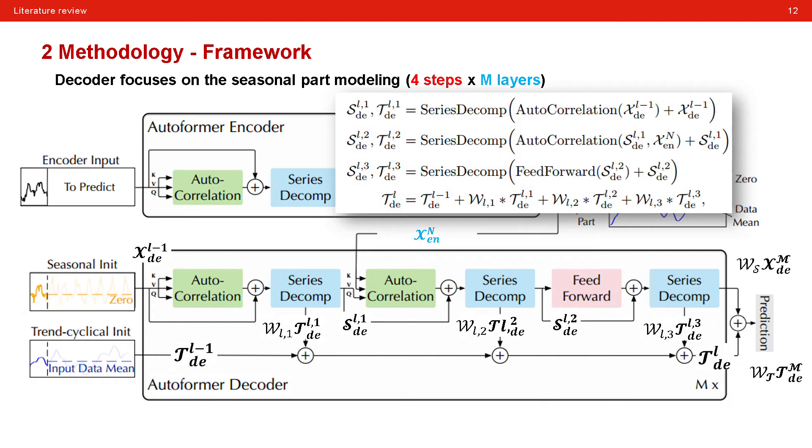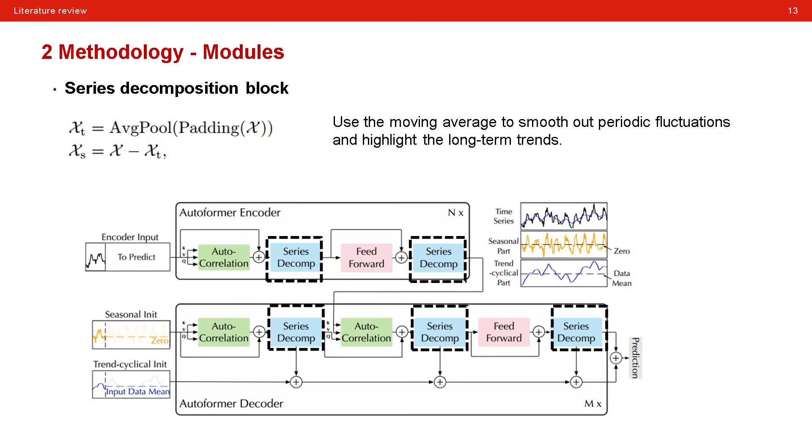I also note the information flow in the figure according to the mathematical expression. Each decoder layer contains inner auto-correlation and encoder-decoder auto-correlation, which can reflect the prediction and utilize the past seasonal information respectively. One thing that should be pointed out is that the auto-correlation block and decomposition block are treated as operator in this framework. As a result, they can not only be trained but also have a kind of interpretability. Now let's move to the microscopic view of this framework and let's see what these inner blocks are actually doing.